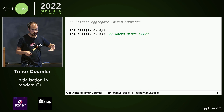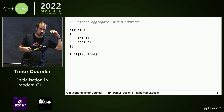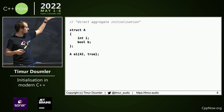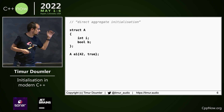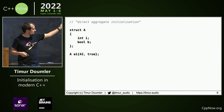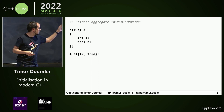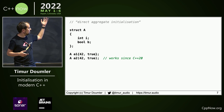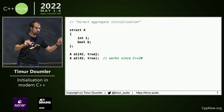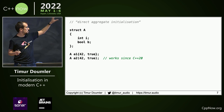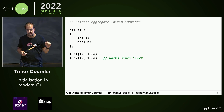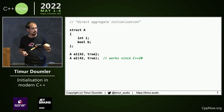Aggregates are of course not just arrays but also aggregate classes like this one here. This is an aggregate class — you could always initialize this with braces, and now you can also initialize it with parens. This has no constructor; this is just aggregate initialization that works since C++20.